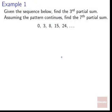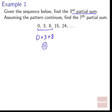First example: given the sequence below, find the third partial sum. Since we're finding the third partial sum, that's as easy as adding up the first three terms: 0 plus 3 plus 8 equals 11. Done — easy.